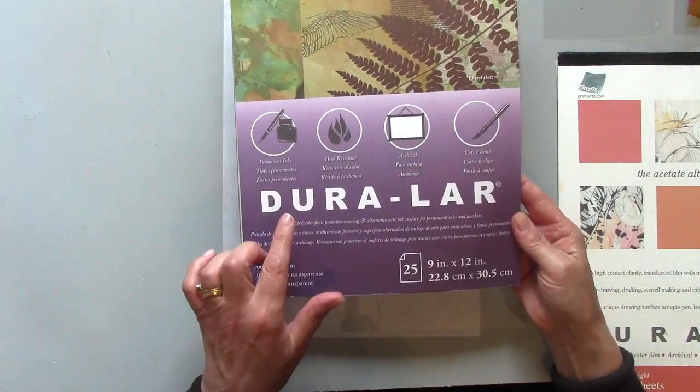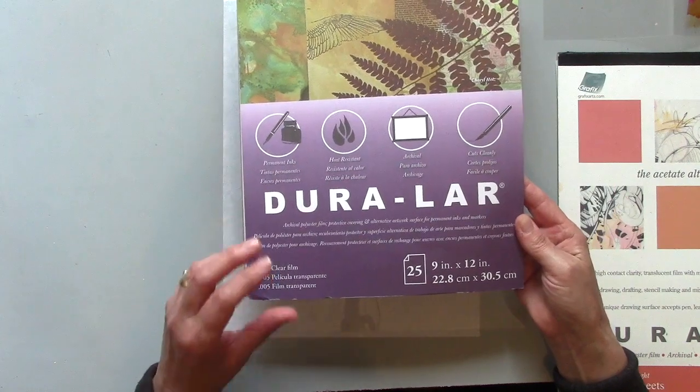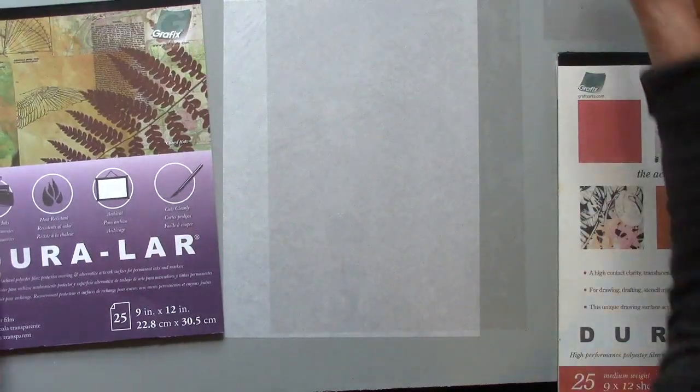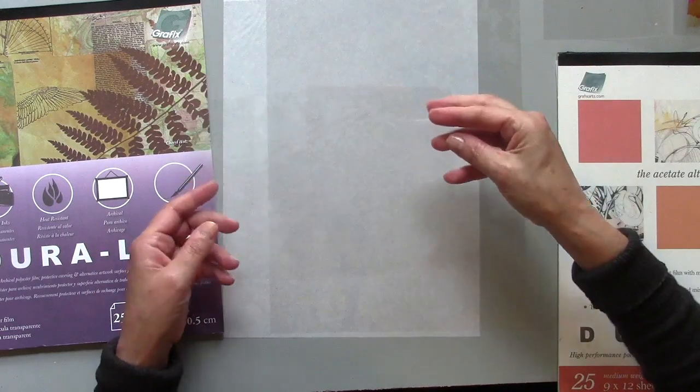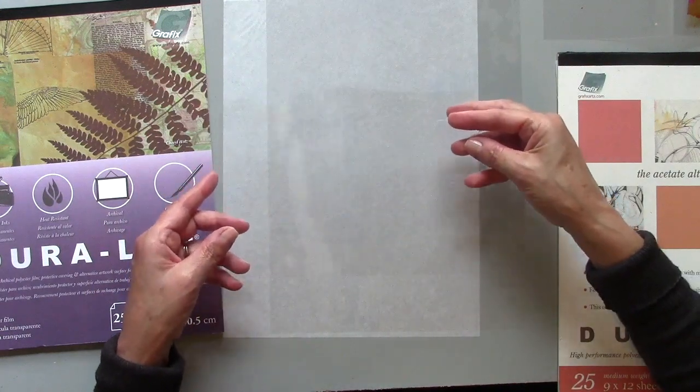I'm going to use the Duralart clear film for the main pages of my journal, and because they are transparent, it's a brilliant way to build up layers and pages in your journal.